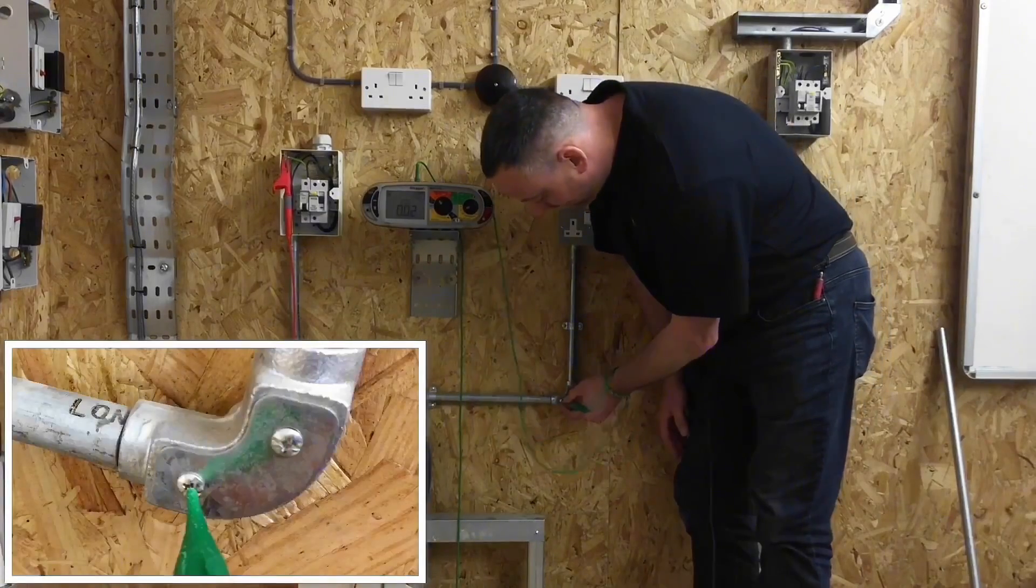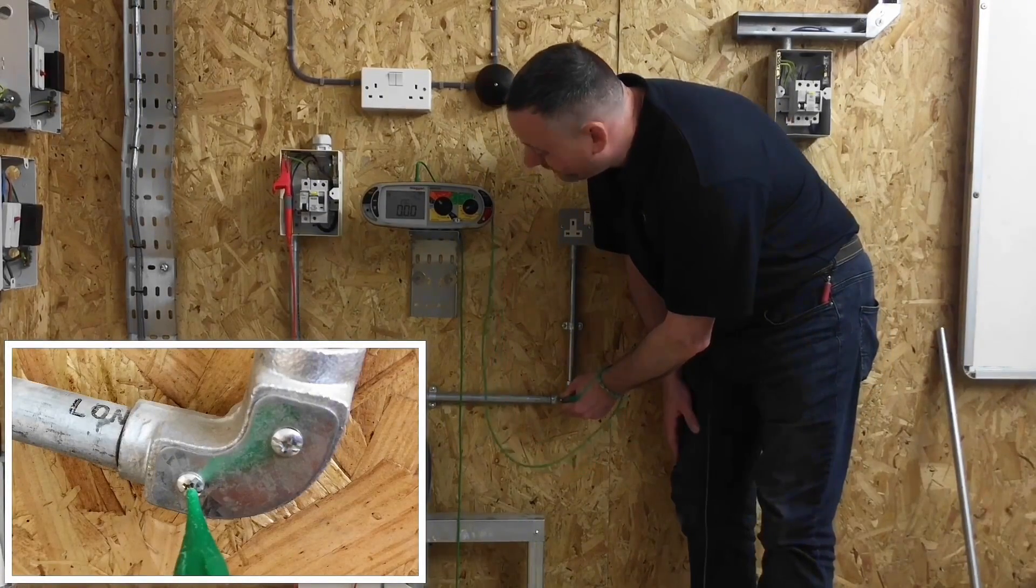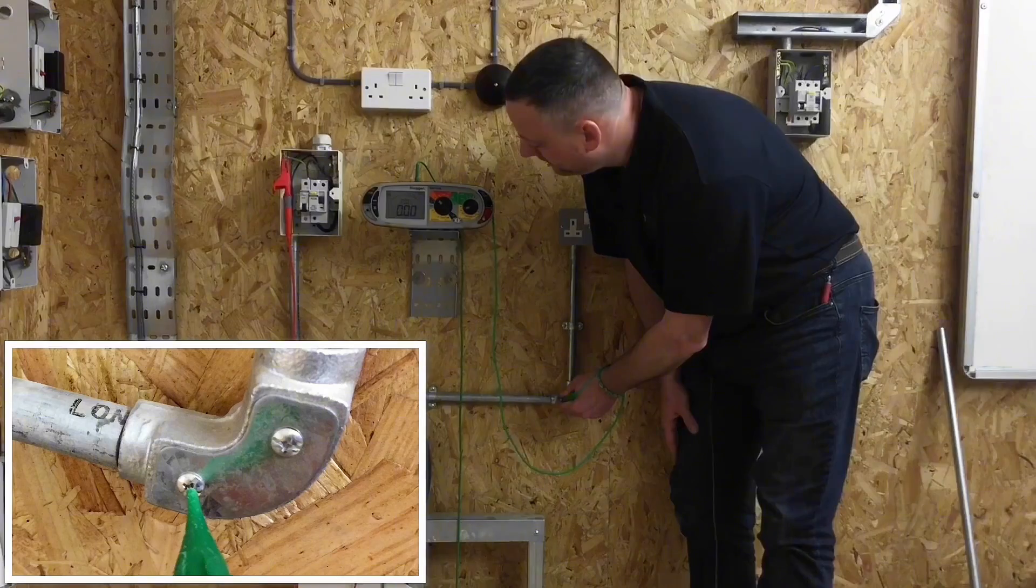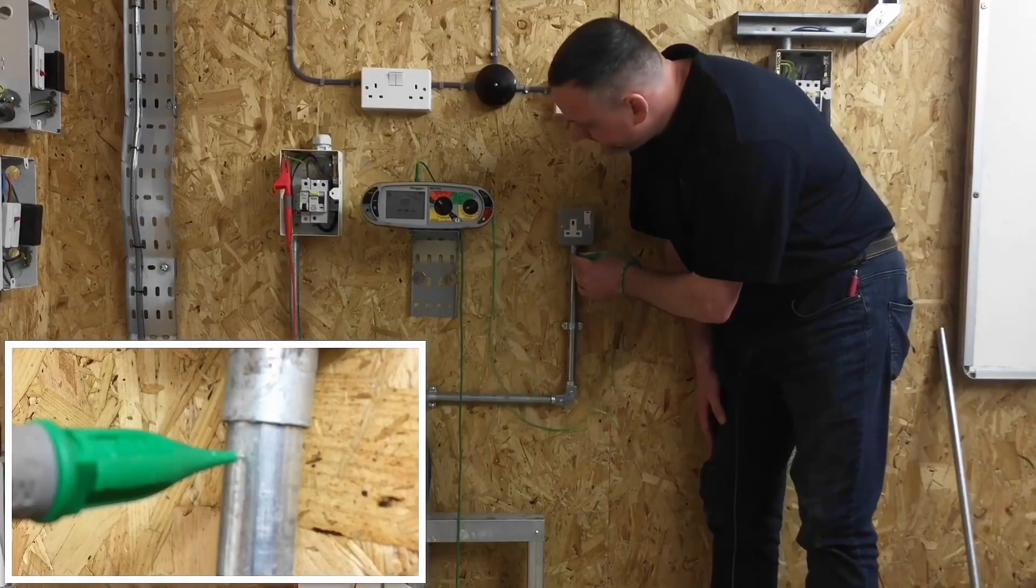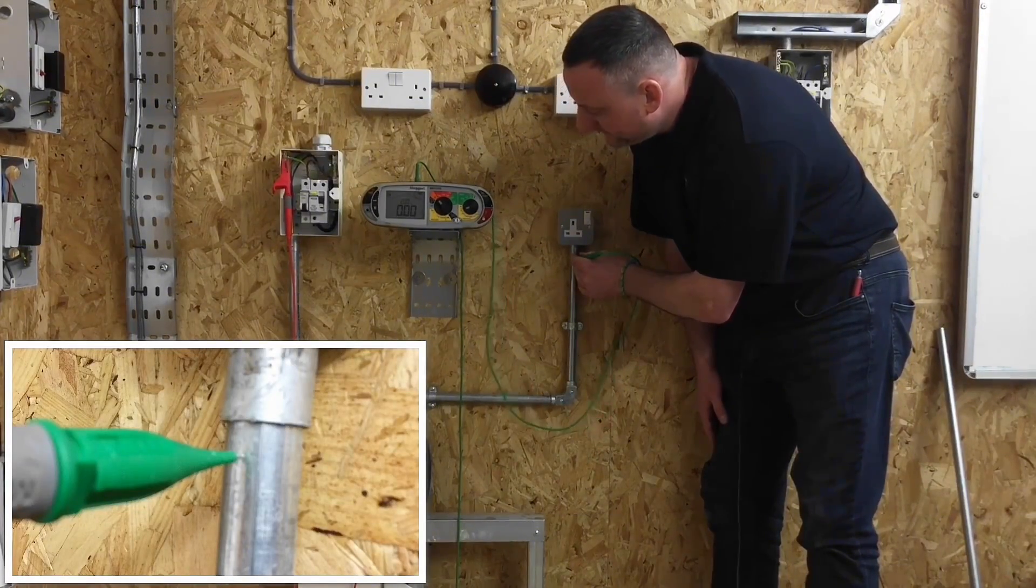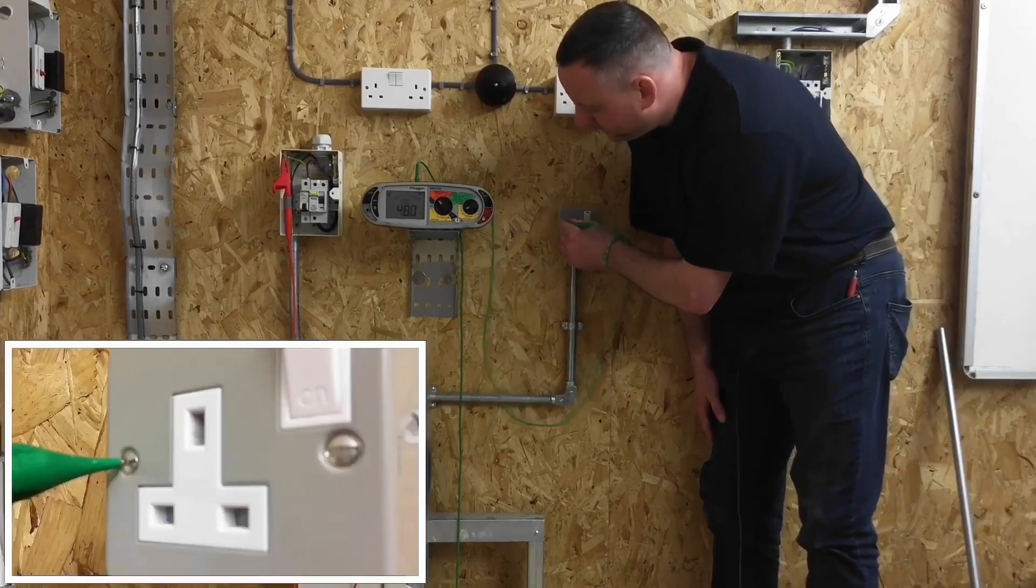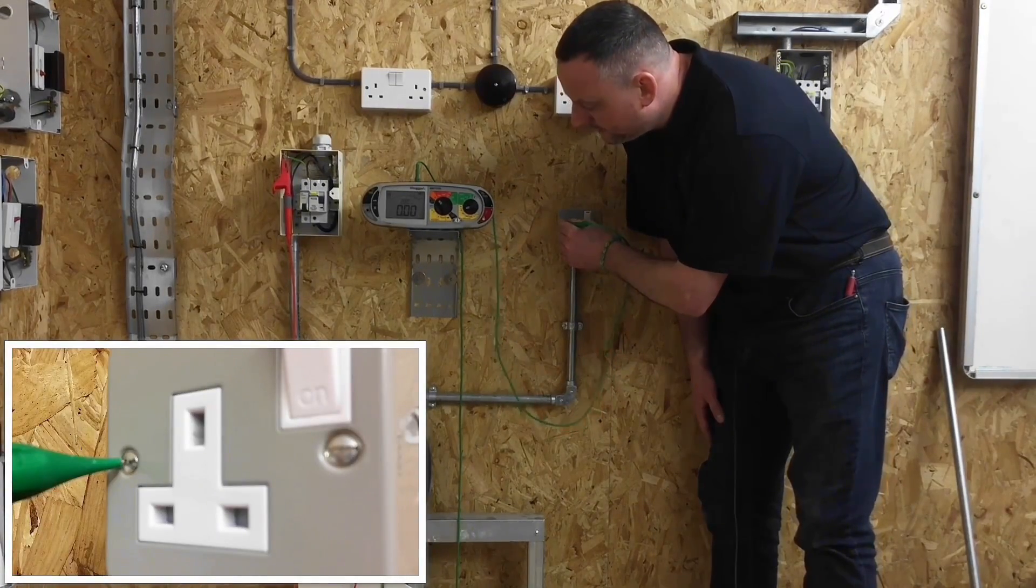So connect onto the conduit itself. I've got a reading of zero, but we explained that earlier. Yep, that's connected to earth. Conduit. Got a reading of zero. And the metal clad socket outlet itself. I've got a reading of zero.